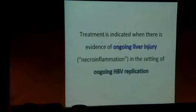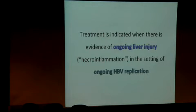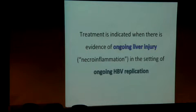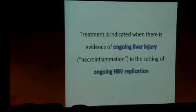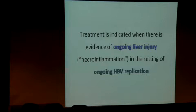Essentially, chronic hepatitis B is not a homogenous condition. It is heterogeneous — both serologically, virologically, biochemically, and histologically — as well as in its clinical presentation through the natural history of a patient with chronic hepatitis B virus infection. Therefore, at various time points, various manifestations are present, and treatment is not indicated at all time points.